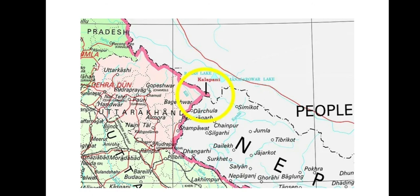Looking at the background: India released its new political map on November 2nd, depicting the geographical areas of the newly carved union territories of Jammu and Kashmir and Ladakh. That map was rejected by Pakistan because it includes the area of Pakistan-occupied Kashmir within the new union territories.